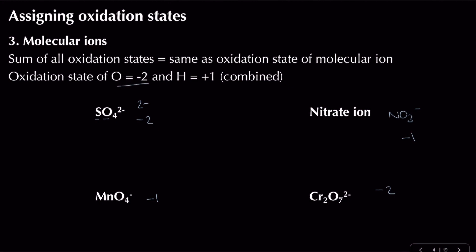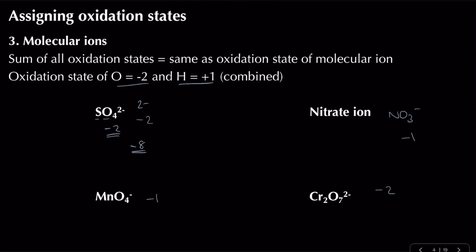A key sub-rule: oxygen when combined is always −2, and hydrogen when combined is always +1, apart from two exceptions we'll cover later. For sulfate, oxygen is −2 and there are four oxygens, giving −8 overall. To get from −8 to −2, sulfur must be +6. So sulfur is +6, oxygen is −2, and overall that gives −2 for the sulfate ion.